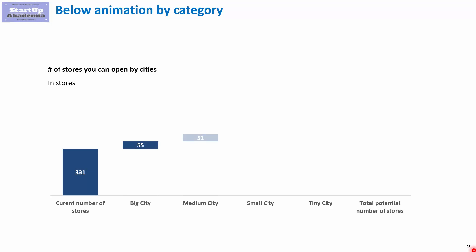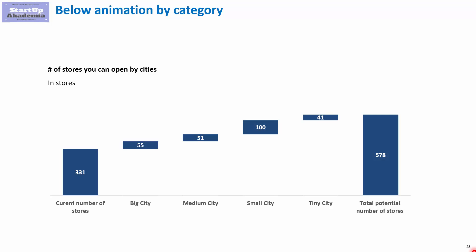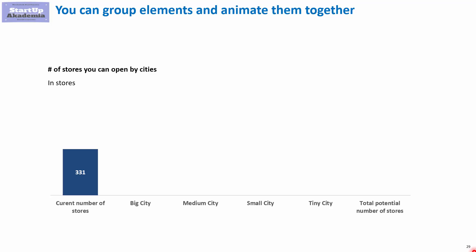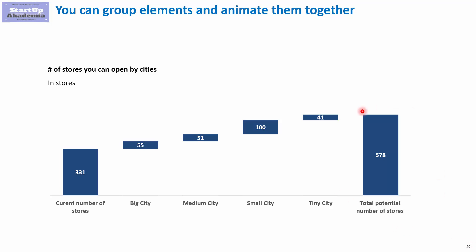We can click in order for specific number of stores related to a specific category of cities to appear. We can also group certain elements — for example, first show the current number of stores, then the increase by different types of city, and at the end show the total number of stores that we can potentially reach.